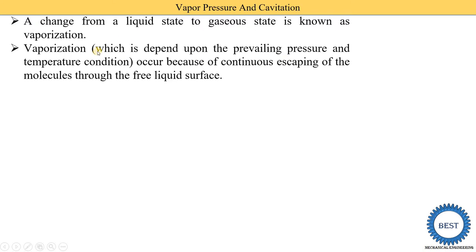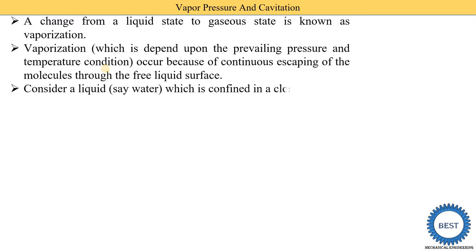Vaporization depends upon the prevailing pressures and temperature conditions. Generally we know that vapor or steam is created at 100 degrees Celsius at atmospheric pressure, but when we reduce the pressure of water, steam is created at a lower temperature than 100 degrees Celsius.